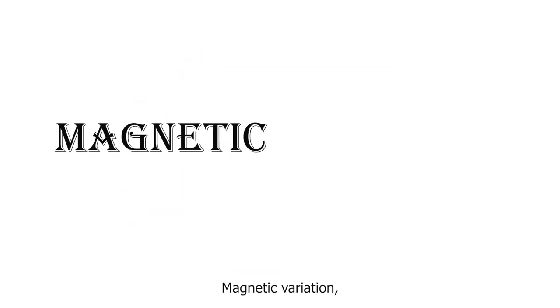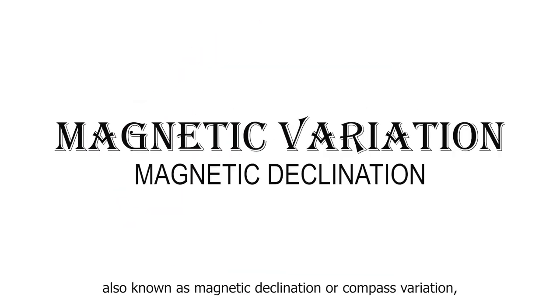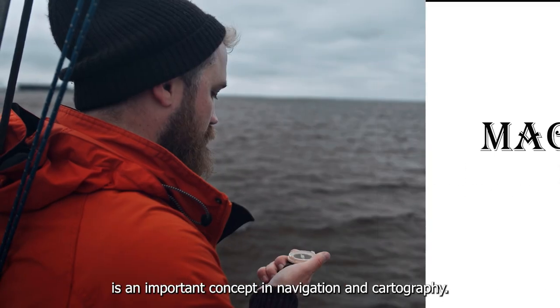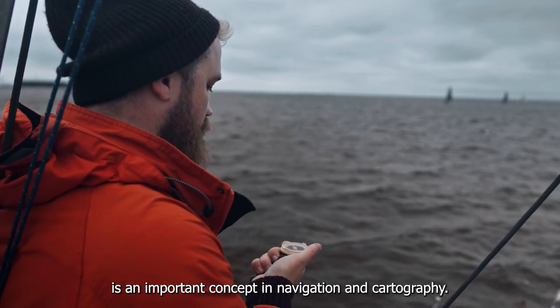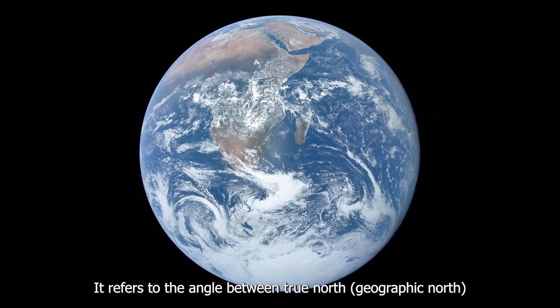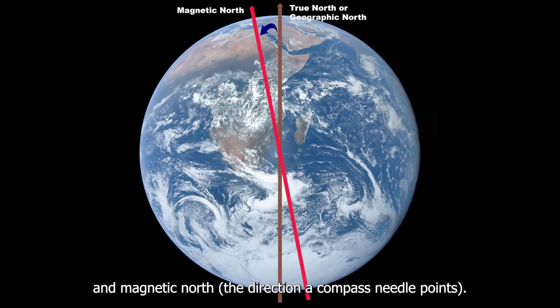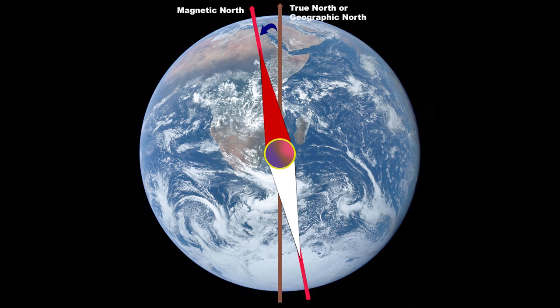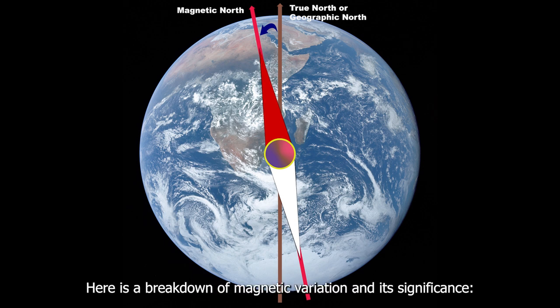Magnetic variation, also known as magnetic declination or compass variation, is an important concept in navigation and cartography. It refers to the angle between true north — geographic north — and magnetic north, the direction a compass needle points.